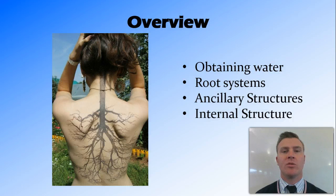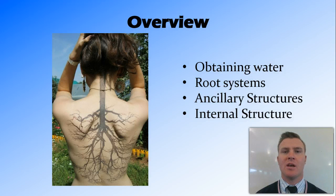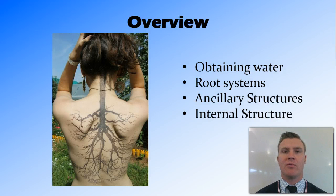In this video, we've looked at why terrestrial plants need a root structure to obtain water, including the increasing of surface area through a network of roots and root hairs. We've looked at the two different types of root systems — fibrous roots and tap roots — as well as some of the ancillary structures associated with roots and the internal structure of the root, with the zone of elongation being protected by the root cap.